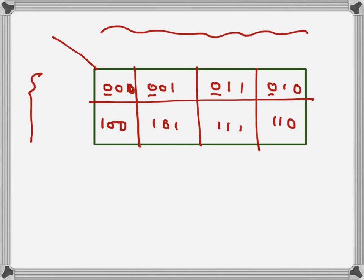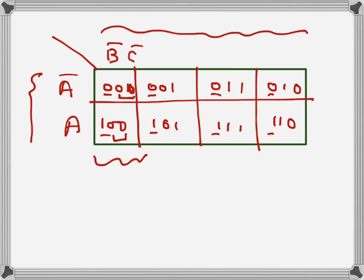Similarly, the bottom row always has A equal to one, so that row corresponds to A. Looking at the columns: the first column has B zero, C zero, so that is B-bar C-bar. Then B-bar C, then B-one C-one so that is B-C, and then B-one C-zero so that is B-C-bar. This is how we identify each cell in the three-variable K-map.